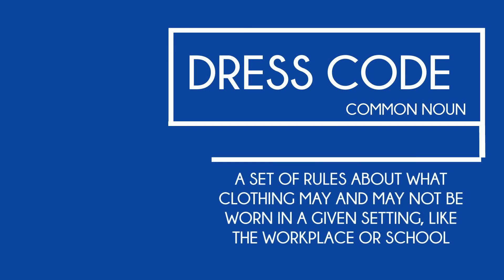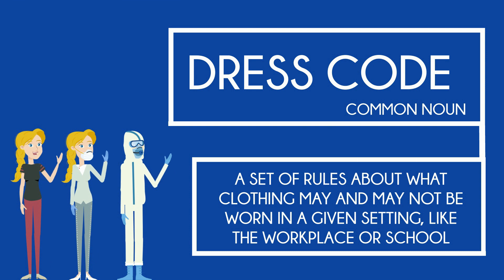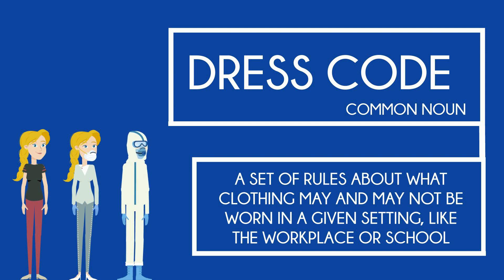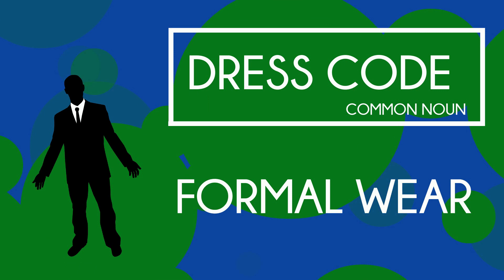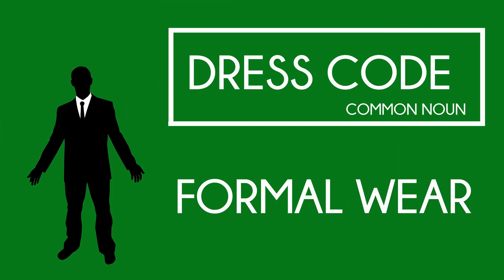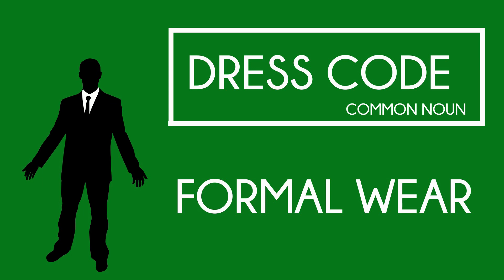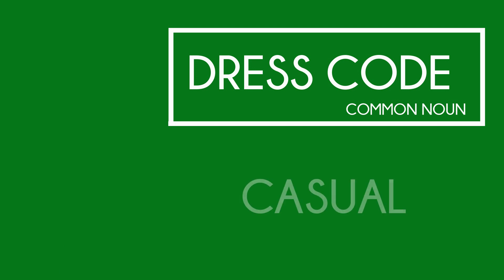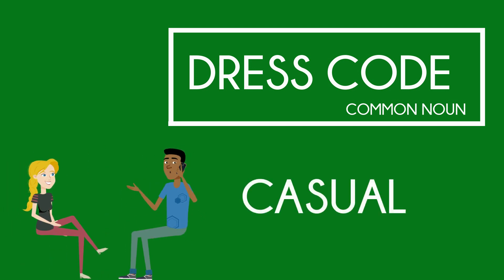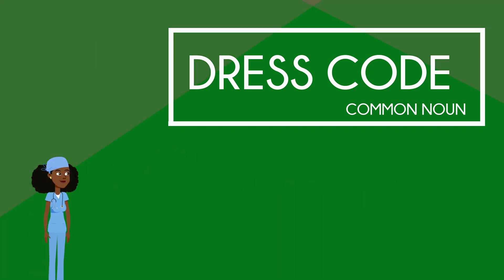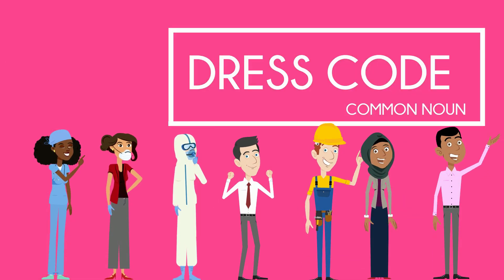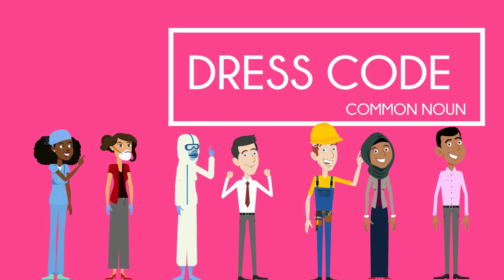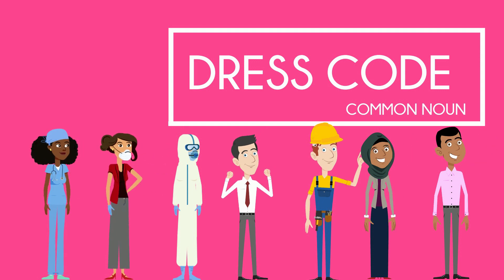Our next business English term is the common noun 'dress code'. This is a set of rules about what clothing may and may not be worn in a given setting, like the workplace or school. Some of the more common dress codes include formal wear, which includes business attire and suits. A dress code becoming more popular in the modern workplace is smart casual — where you mix smart wear like shirts with casual wear like jeans. Some workplaces even have a casual dress code, meaning you can wear pretty much anything you like. There are many different types of dress codes from medical settings to school, religion, construction, and much more.